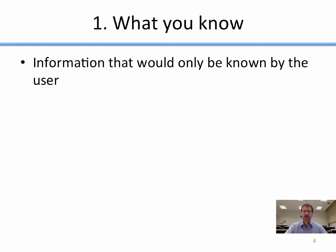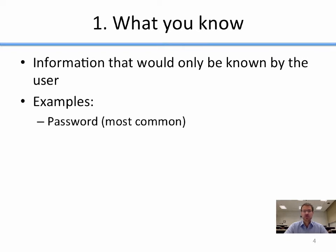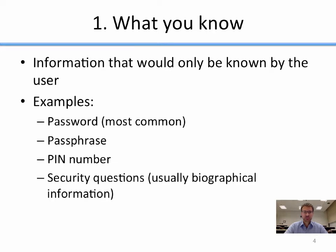The first factor is what you know — traditionally, information only known by the user that the computer can also verify. Normal examples include a password, which is the most common instance of a what-you-know mechanism; a passphrase; a PIN number, which is classic for the banking industry; and security questions. Security questions are one of the worst kinds, because they're usually biographical information, and biographical information about a person is often public record.